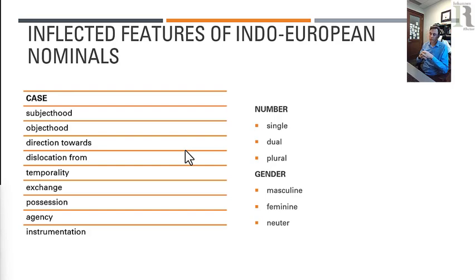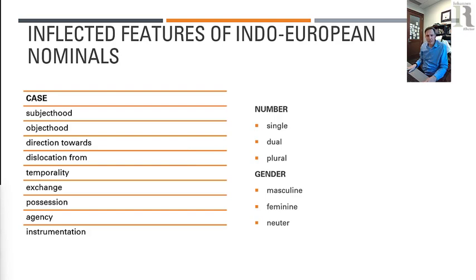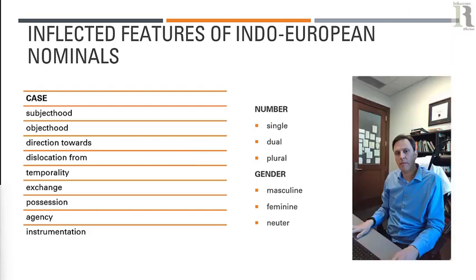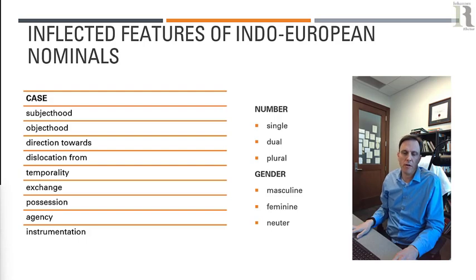The other thing that Indo-European nouns inflect for is number, and this we have kept to some extent in English — we still inflect nouns for number: tooth/teeth, computer/computers, professor/professors, goose/geese. This video's gone on long enough, so I'm going to let you take a break, get a drink of water, do something fulfilling with your life. And then I'm going to do a whole other video on inflections of verbs.